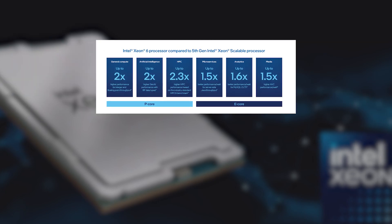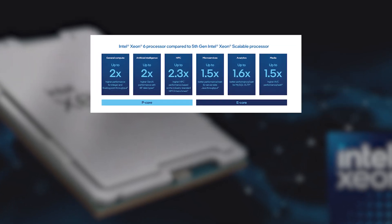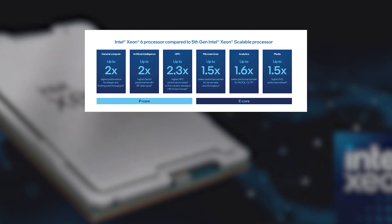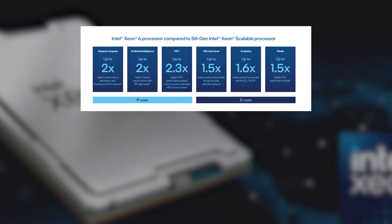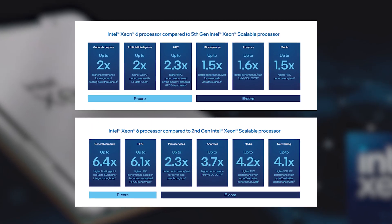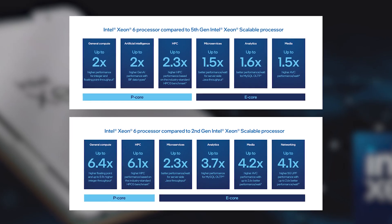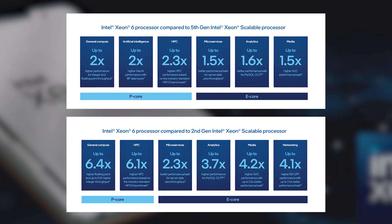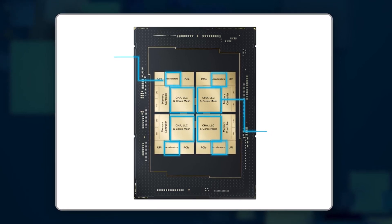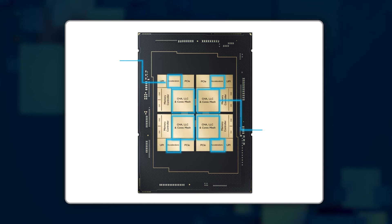Intel claims that Xeon 6900s provide twice the performance of 5th gen Xeon Scalable CPUs in a wide range of workloads, including AI inference and machine learning. In contrast, Intel claims that Xeon 6700s deliver 2.6 times better results against 2nd gen Xeon Scalable CPUs. Alongside the P and E cores sit the fixed-function accelerators introduced with the 4th gen Xeon Scalable.